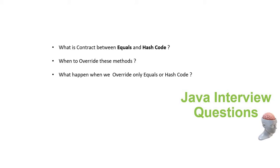What happens if I override only the equals or only the hashCode? What is the behavior? What is the impact? They want to know all these things from you to understand how strong you are on the fundamentals. Let's go through each one of these, starting with what is the contract between equals and hashCode.